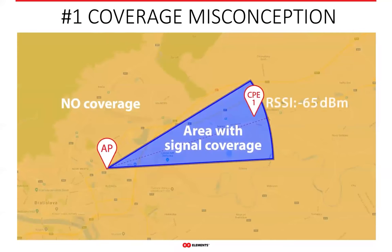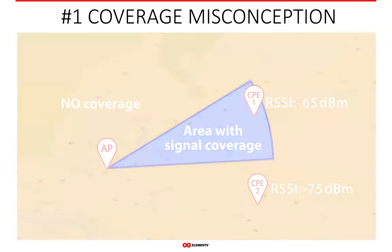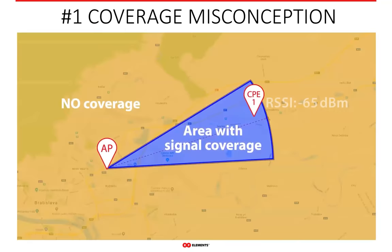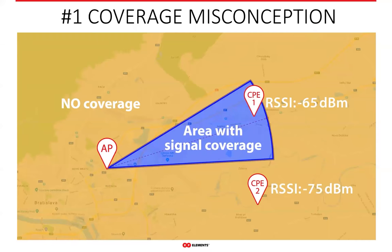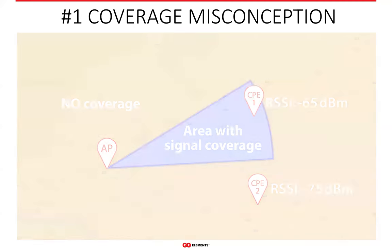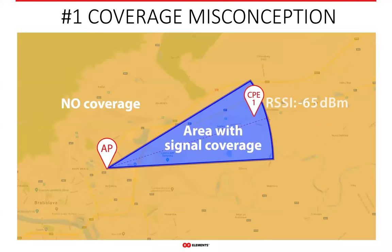But this is a huge oversimplification of what coverage really is. The reality is that various link calculators show some signal strength even if you place the client device outside the area supposedly covered. Something doesn't add up. Obviously there must be some mismatch between what is shown and reality, because coverage is not a digital variable — not a value of 1 inside the blue area and 0 everywhere else.